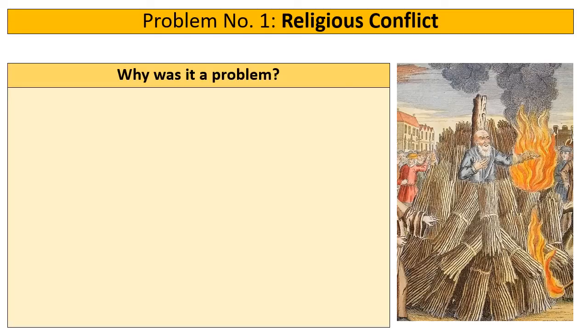I'm going to ask you to pause the video and see if you can remember and jot down reasons why religion and religious conflict was a problem for Elizabeth when she came to the throne in 1558. When you think you've got some ideas down, unpause the video and I'll go through why that was a problem.